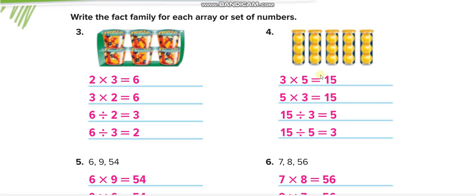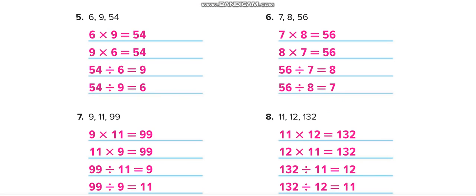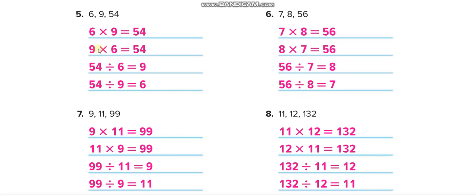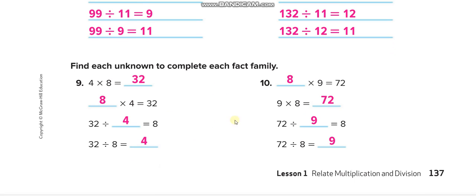Here, instead of pictures they give you numbers to write the fact family. For example: six times nine equals fifty-four, then write the full fact family. Similarly for seven times eight equals fifty-six, nine times eleven equals ninety-nine, and eleven times twelve equals one hundred thirty-two. You have to fill in the blanks.